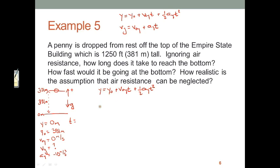So y is 0, Y naught is 381, V naught is 0, and the acceleration is negative 10. So, there we go. Okay, so simplifying, I'm going to move the 381 to the other side.